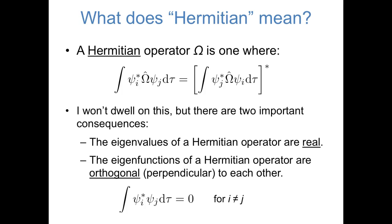Another property of Hermitian operators is that all of the eigenfunctions are orthogonal to each other — that basically means that the functions are perpendicular to each other. The definition of orthogonality is shown at the bottom of the slide. If you take the integral of two functions multiplied together over all space and it comes out to be zero, then those two functions are orthogonal. As we'll see later on, it's important that all of the eigenfunctions of a given operator are orthogonal to each other. That's why, for example, all of the atomic orbitals of a given atom are orthogonal to each other.